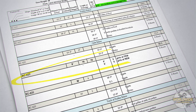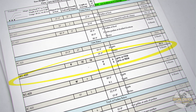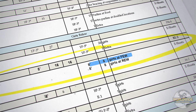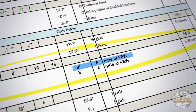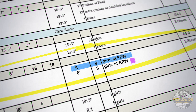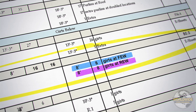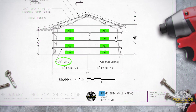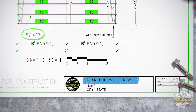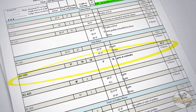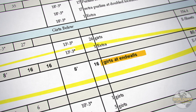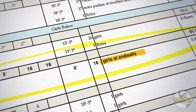For the end wall girths, locate the necessary secondary members that indicate they are for FEW or REW that pertain to the end wall you are working on. If the girths are identified only as girths at end walls, then these girths are used at both end walls.